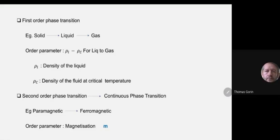Thanks. Now there is something called critical exponent and universality. Let me first define something called the reduced temperature. From now on, all the phase transitions I discuss will be with respect to temperature.